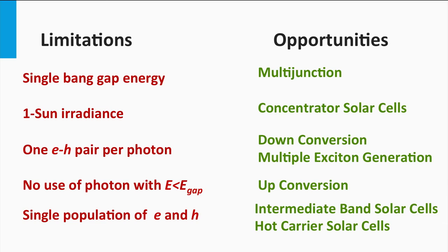The last problem in the list is that of a single population of each charge carrier. In theory, this can be tackled by hot carrier solar cells. Here the charge carriers are collected just after light excitation, before they are relaxed back to the edges of the electronic bands. This improves the bandgap energy utilization.